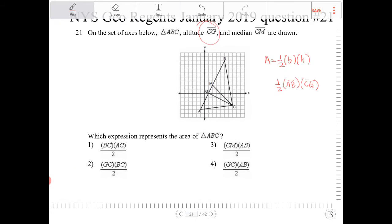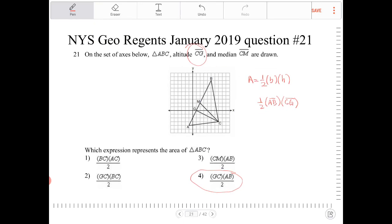And is there an answer choice that best matches that? Let's take a look. AB and GC divided by 2, that looks like it's going to be option 4. So yawn. Okay. Thank you.